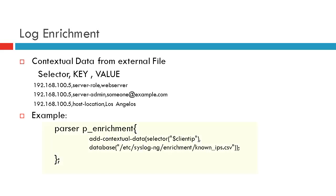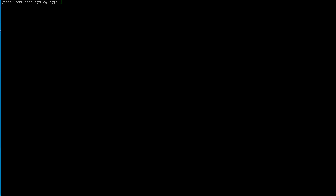Here we create a parser called p_enrichment using the add_contextual_data function, which takes two arguments: the selector and the path to the external file. In this case we use the client IP as the selector. As logs are parsed, it looks up the client IP address macro, finds the matching value in the external database file, and creates that key-value pair in the log. That's how the log message gets enriched.